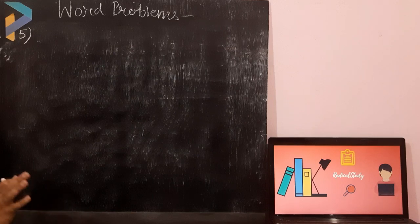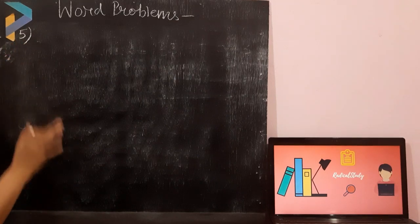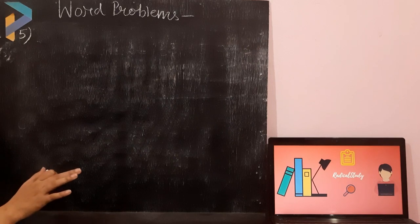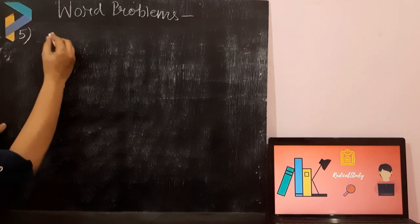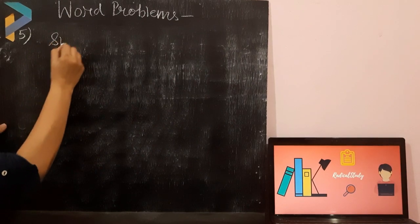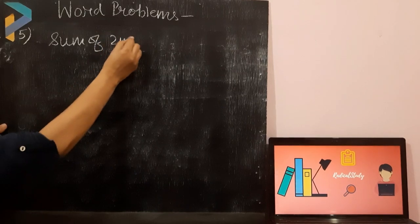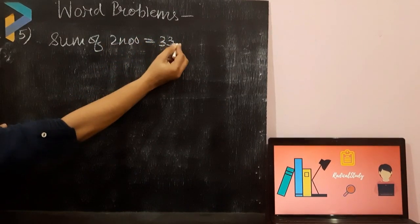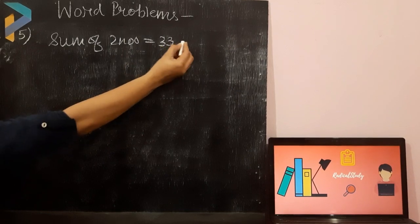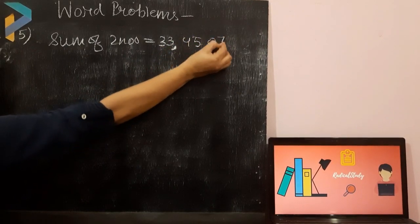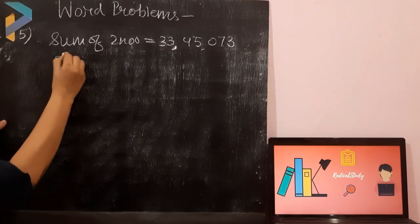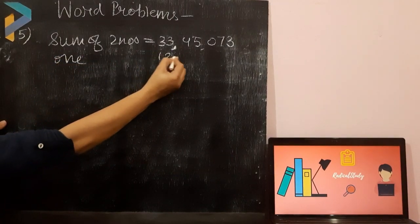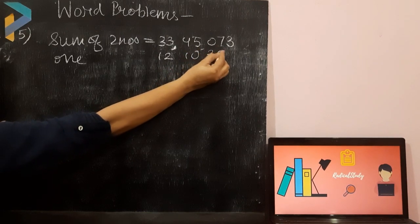I will solve three word problems for you. I will solve from question number five. Sum of two numbers is 33,45,073. Now, if one number is 12,10,357, find the other.